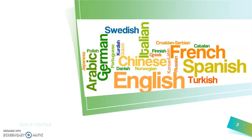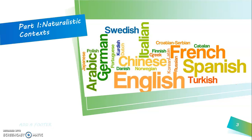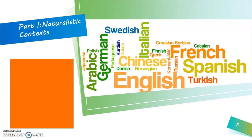Let's get started. First of all, what do we mean by naturalistic contexts? Pause this video and think about contexts or circumstances where a language is learned in a natural way. The two naturalistic contexts are immigration and study abroad.